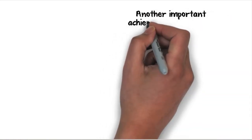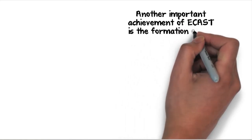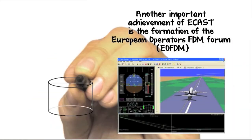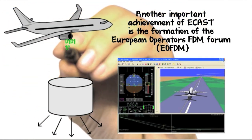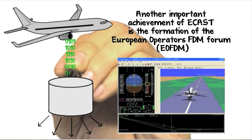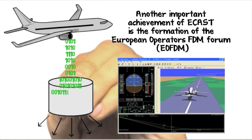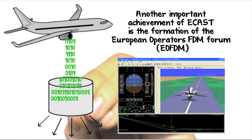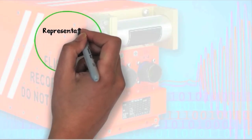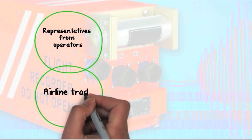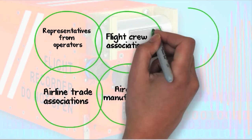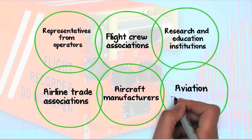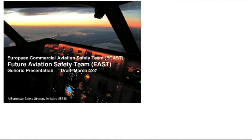Another important achievement of ECAST is the formation of the European Operators FDM Forum, which aims to facilitate the implementation of flight data monitoring programmes, share industry best practices, and help operators draw the maximum safety benefits from an FDM programme. Four working groups welcome participation from representatives from operators, airline trade associations, flight crew associations, aircraft manufacturers, research and education institutions, and aviation regulators.